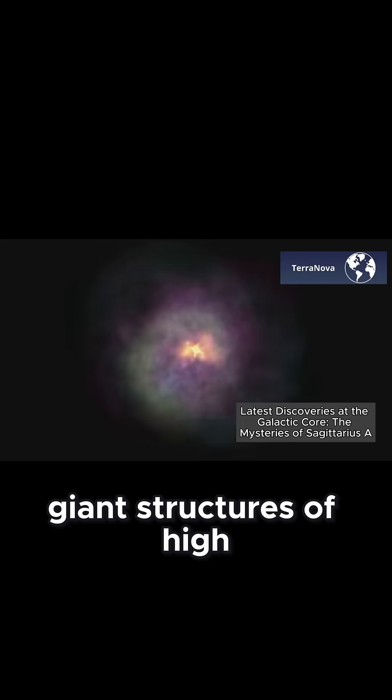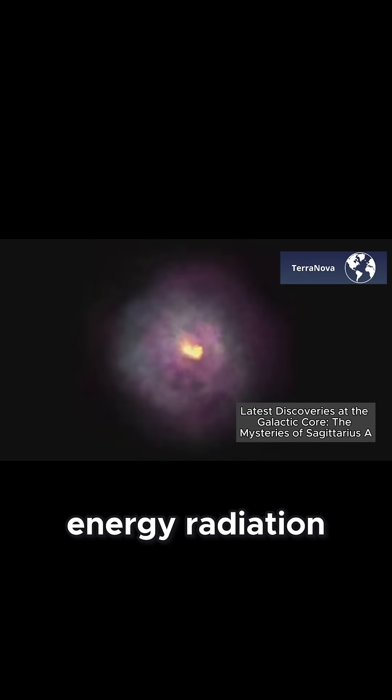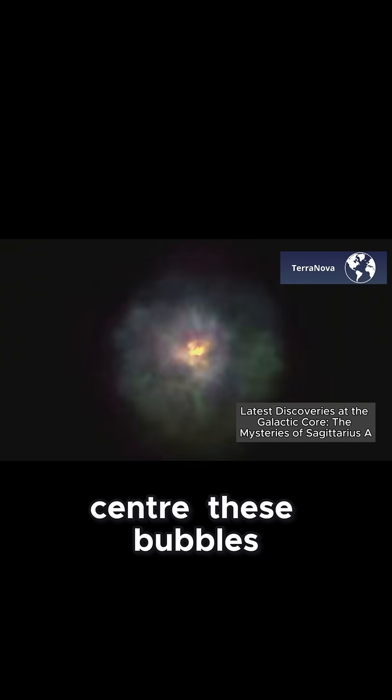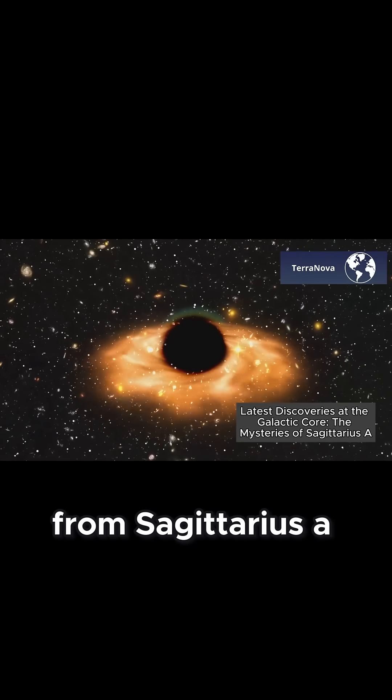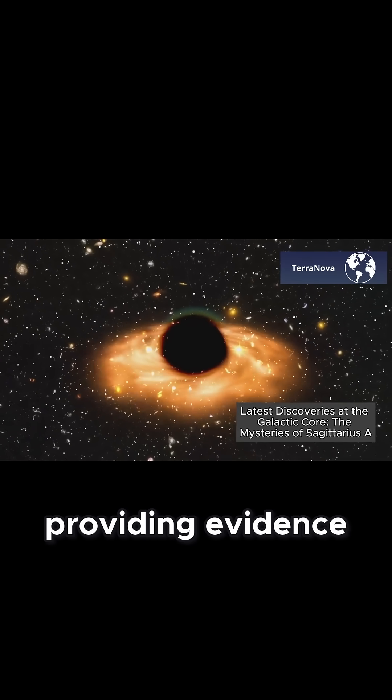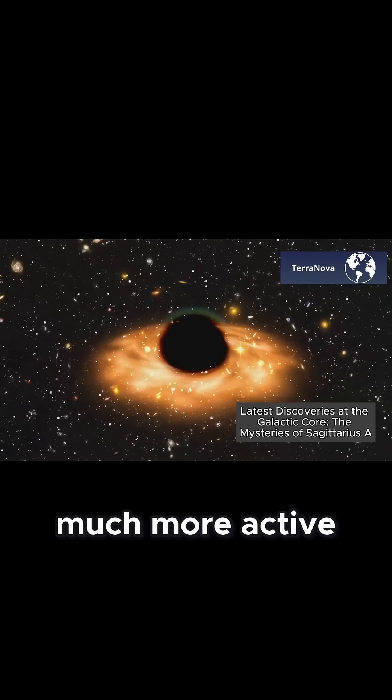One fascinating discovery is the presence of Fermi bubbles, giant structures of high-energy radiation extending from the galactic center. These bubbles are believed to be remnants of past outbursts from Sagittarius A, providing evidence that it was once much more active than it is today.